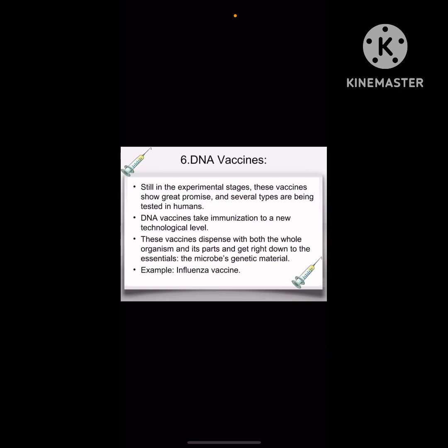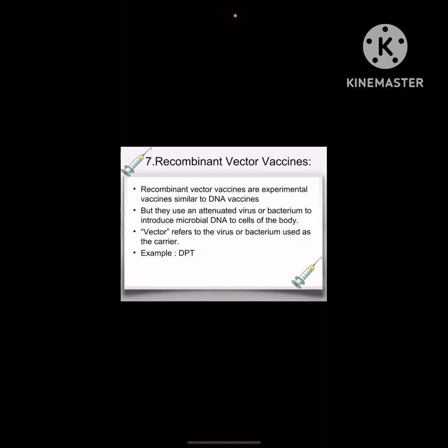Agle hamare DNA vaccines hain jo ki several types mein bahut human beings mein test ki gayi hain. Isne immunization ki ek nayi technology develop ki hai, jaise ki influenza vaccine. Next aate hain hamare recombinant vector vaccines — yeh hamare DNA vaccines ke similar hote hain, but they use an attenuated virus or bacteria to introduce the microbial DNA to the cells. For example, DPT.